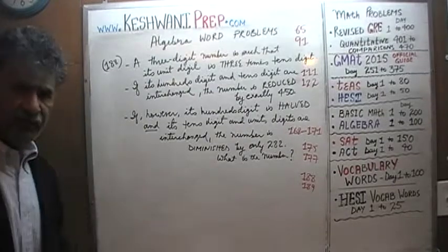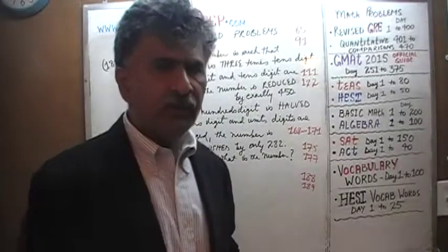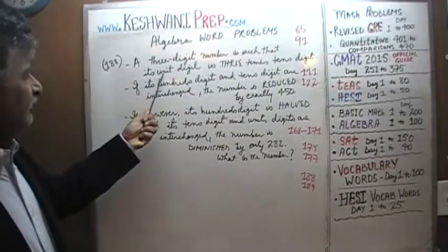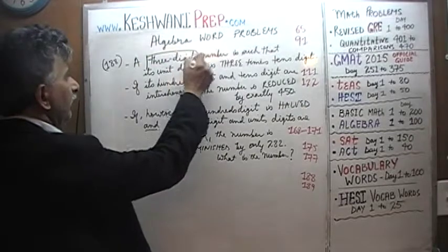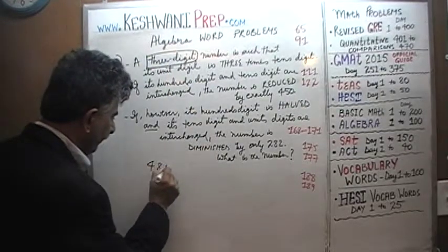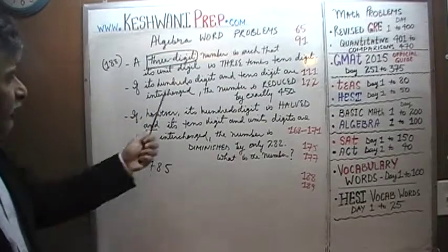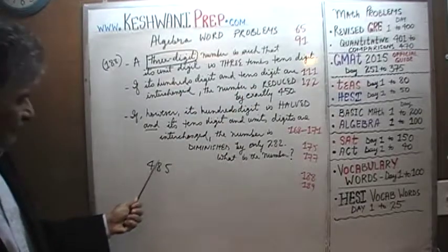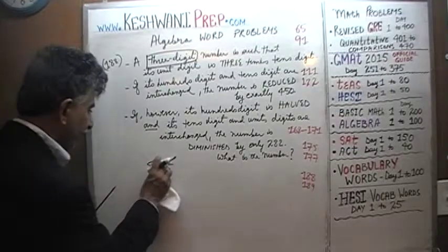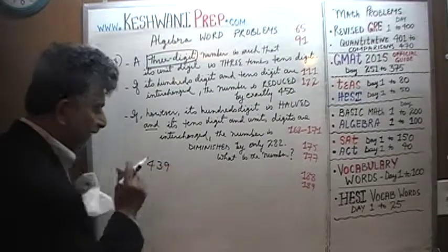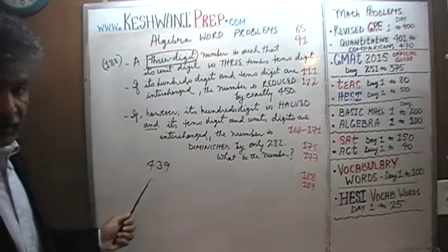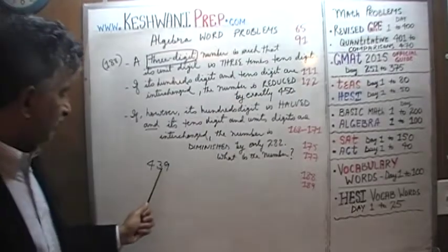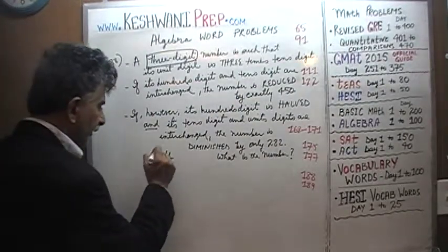The very first thing we need to do before we begin the solution is to understand exactly what we are being told. We have a 3-digit number — for example, let's say 485. The unit digit here is 5, and 5 is not 3 times 8, so this won't work. We need something like 39, where the unit digit 9 is indeed 3 times the 10th digit 3. This satisfies the first condition.